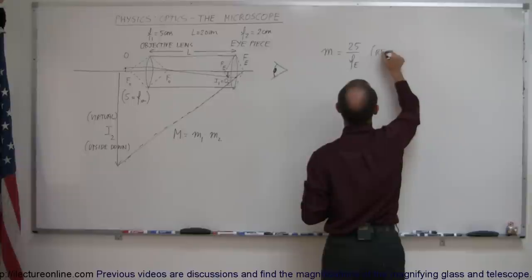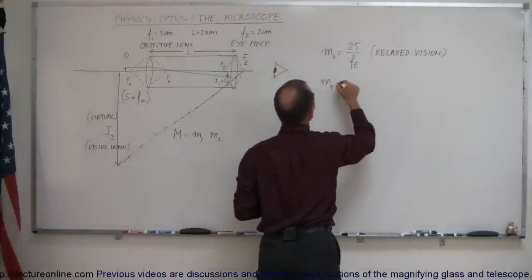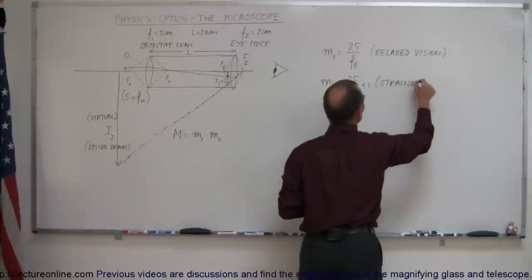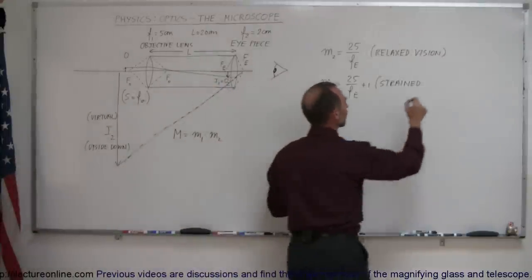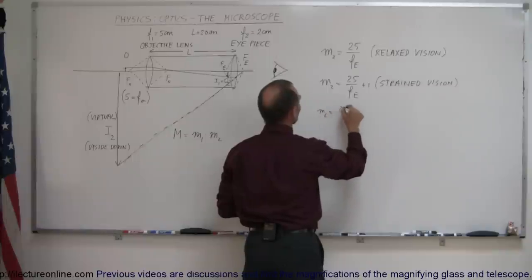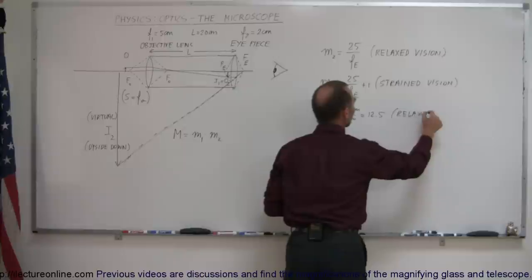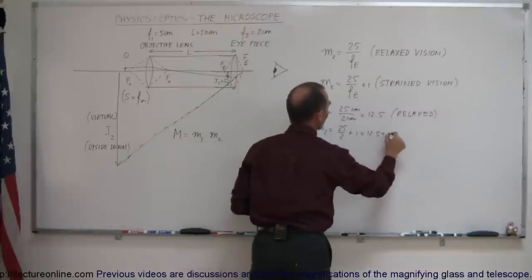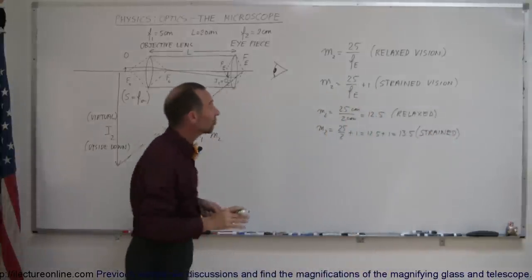The magnification of a magnifying glass is equal to 25 cm divided by the focal length of the eyepiece for relaxed vision, or M₂ = 25/f_e + 1 for strained vision. With strained vision, the image is placed about 25 cm from the observer. In our example, since the focal length is 2 cm, M₂ = 25/2 = 12.5 for relaxed vision, or 25/2 + 1 = 13.5 for strained vision.